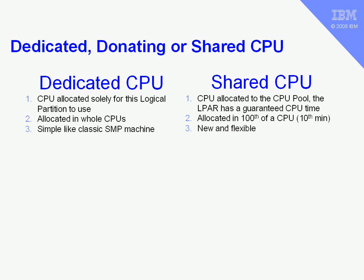Dedicated CPU partitions are easy to understand because they just look like a standard SMP machine — you have, say, four CPUs, they are yours, you do what you like with them. Shared CPUs are new, and they'll take a little bit of learning and understanding, but they are a lot more flexible and they actually save money.